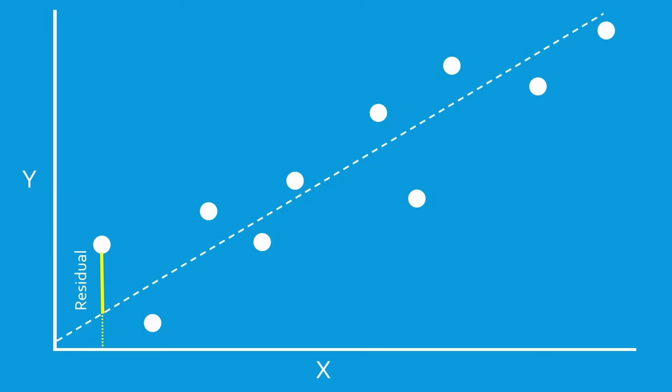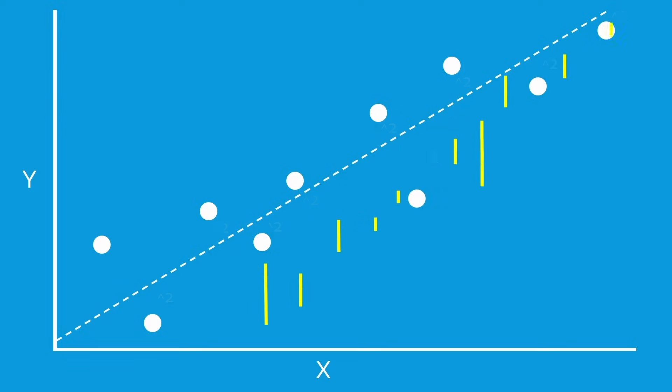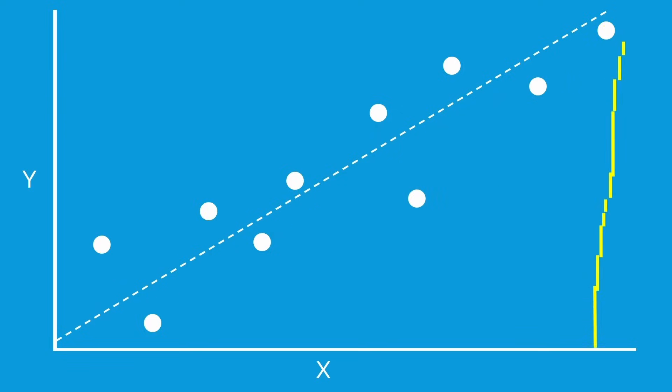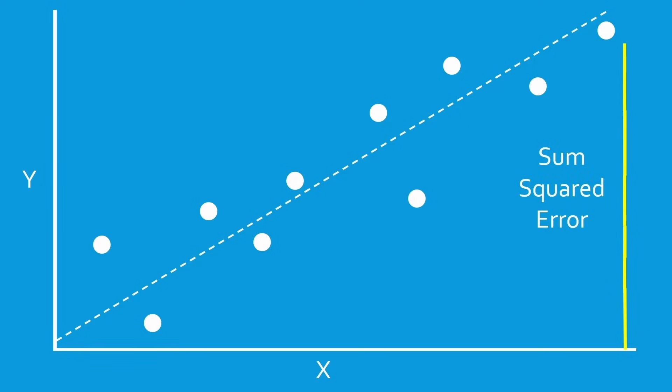This residual value is calculated between each of the data points and the line. To give only positive error values, the error is usually squared. Next, the individual residuals are summed to give the total error between the data and the line — the sum of squared errors.